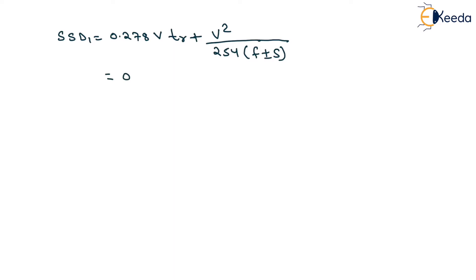SSD1 will be equal to 0.278 times V, where V is 90, and the reaction time will be 2.5 seconds for stopping sight distance, plus 90 squared divided by 254 times F. The value of F is 0.35 as given in the question. After solving this, we get SSD1 equal to 153.66 meters.